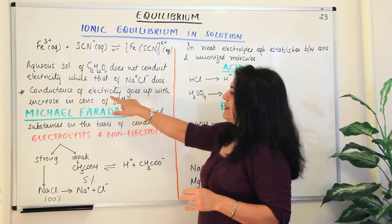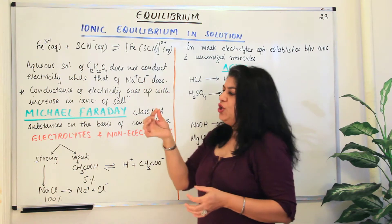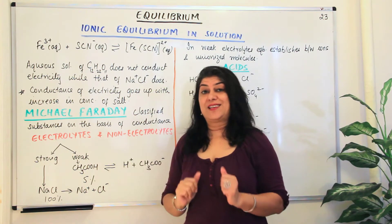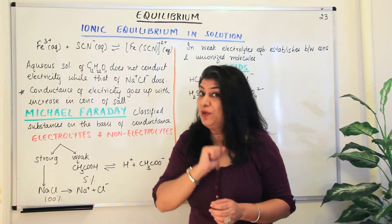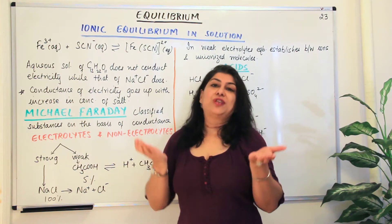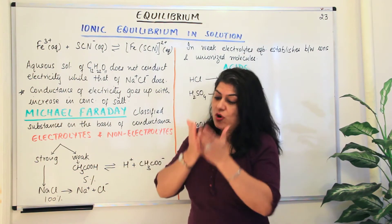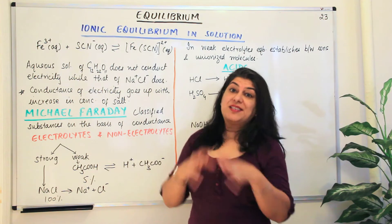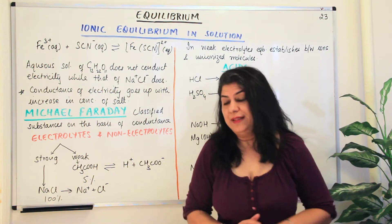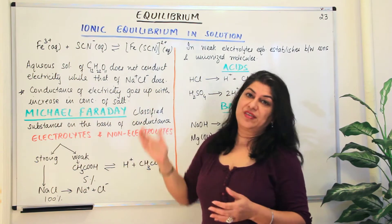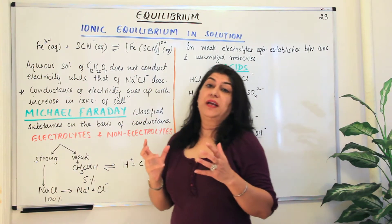Conductance of electricity goes up if you increase the concentration of sodium chloride. You add a pinch and it starts conducting; you add a teaspoonful, the conductance goes up. So the more ions present in the solution, the more carriers of electric charge there are, and therefore the conductance of electricity goes up when you add more ionic compound.